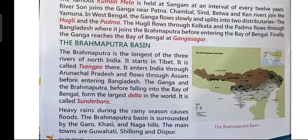A delta is an area of low, flat land, triangular in shape. When a river splits and spreads out into several branches before entering the sea, a delta is formed. The world's largest delta is the Sundarbans delta, and it is formed by two rivers — Ganga and Brahmaputra.